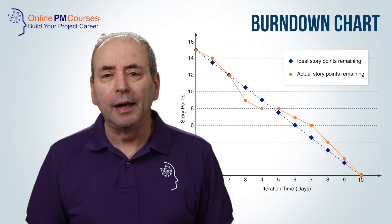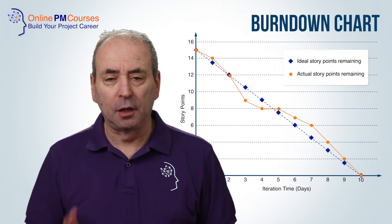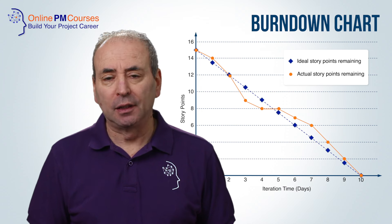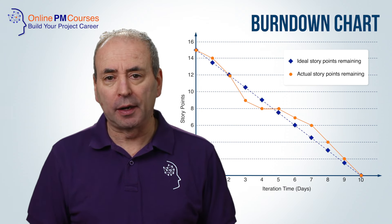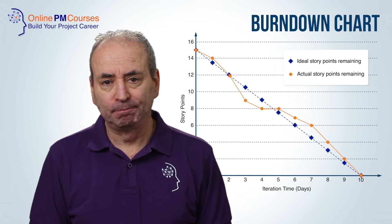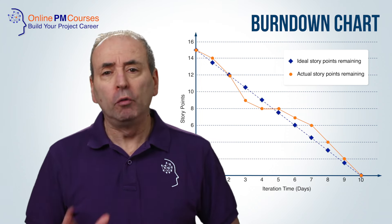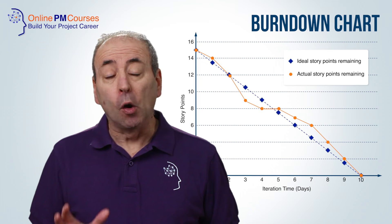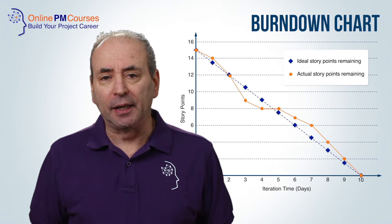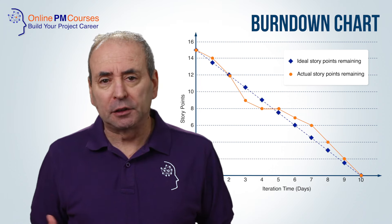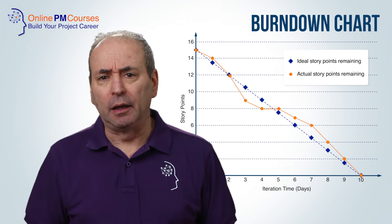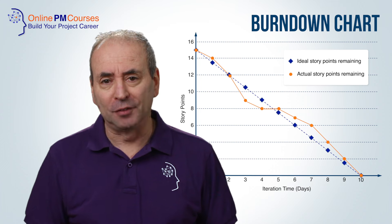Clearly, when we plot the ideal or planned burn curve initially, if we use hours as our estimate for the amount of work, we would expect to see a straight line. When we use story points, and assuming all of our story points are of the same size, we would expect to see either a straight line, or more likely a jagged line that follows the path of a straight line.